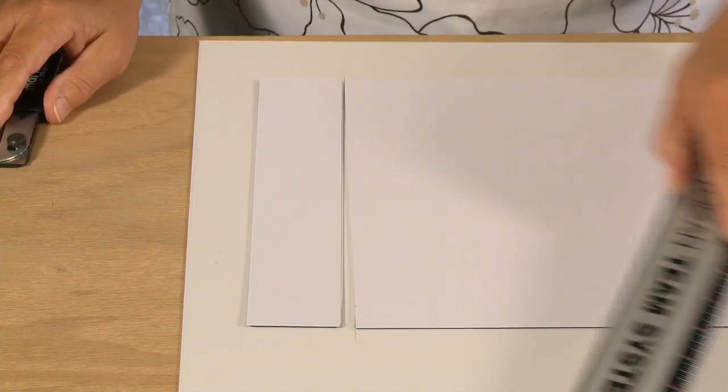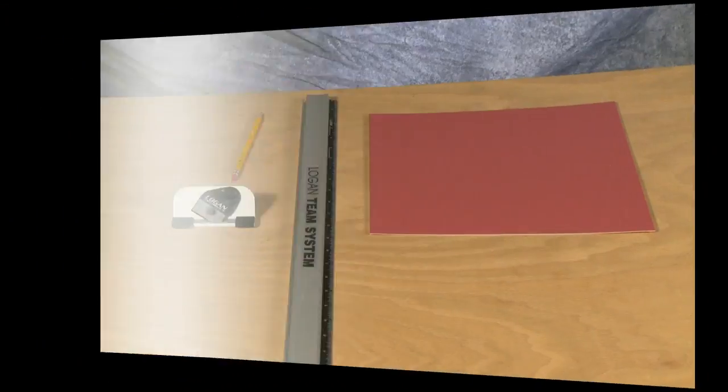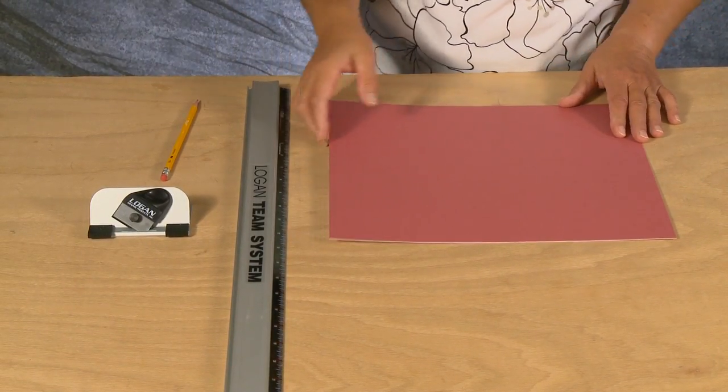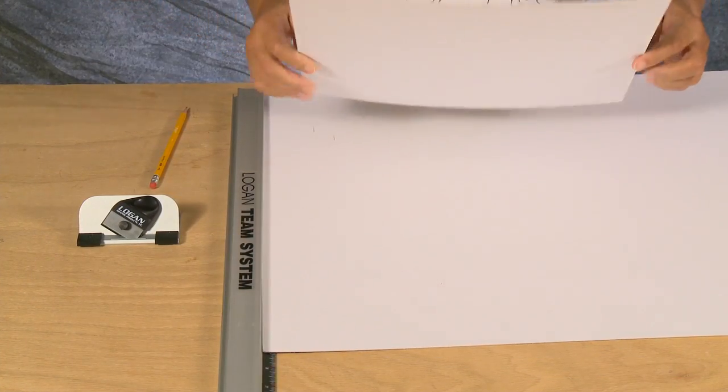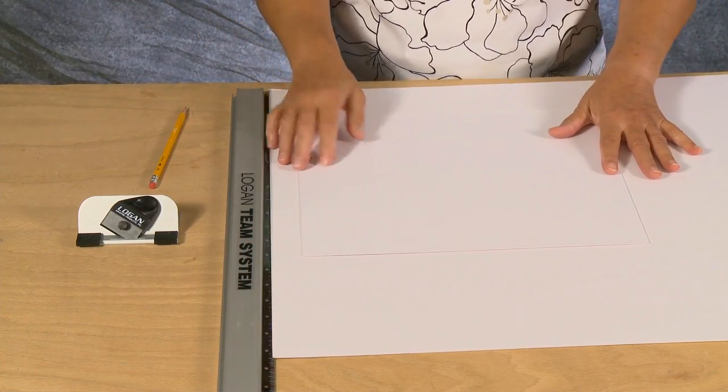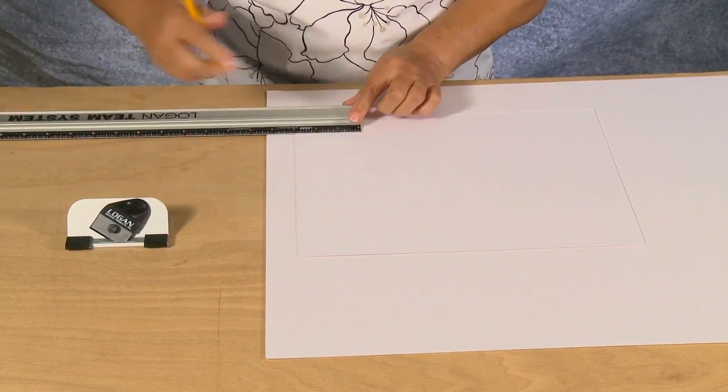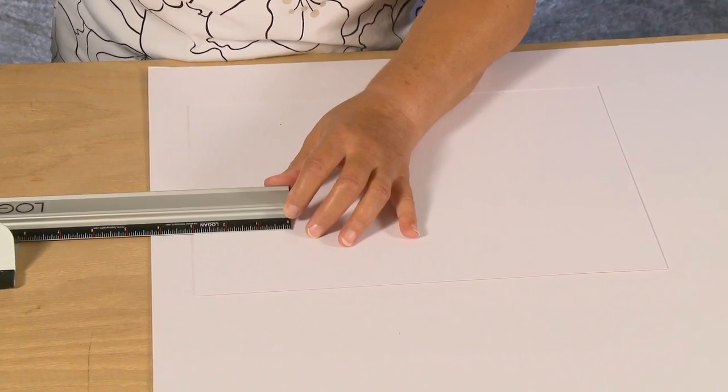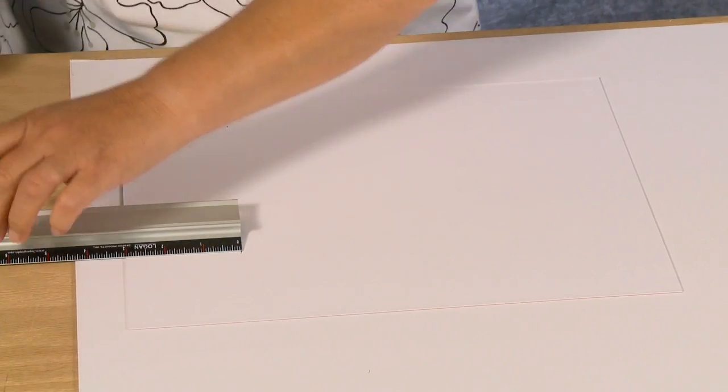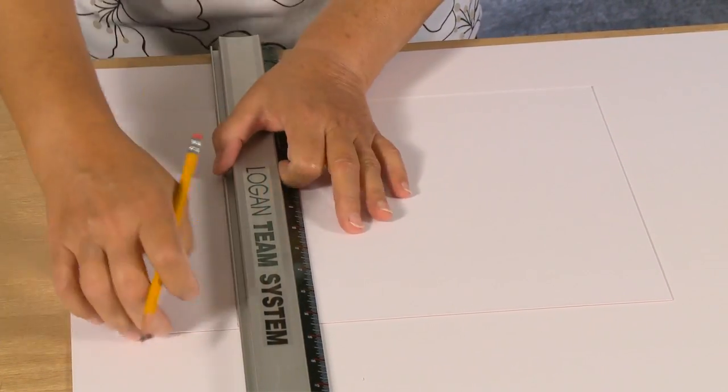To bevel cut an opening using the Logan Team System Plus, always use a slip sheet. Use the scaled side of the straight edge to mark out four borders on the back of the mat board. Use the opposite side of the straight edge to connect the lines. Repeat this process to mark all four borders.